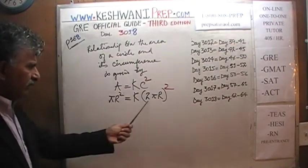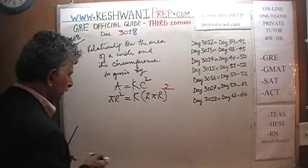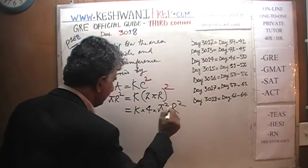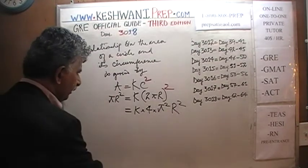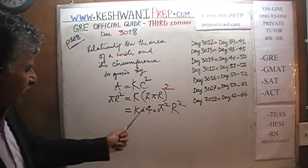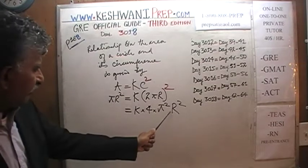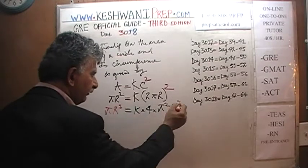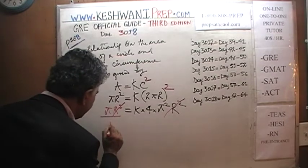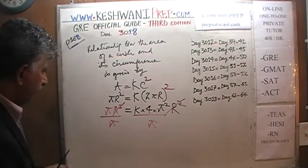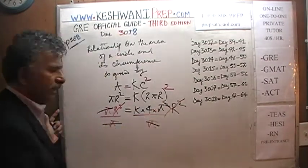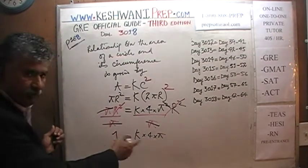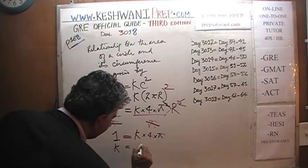We solve for k. Opening the parenthesis: k times 4 π squared r squared. Since the left side is π r squared, we divide both sides by r squared — r squared cancels. Then dividing both sides by π, the π on the left disappears, and 4π squared becomes 4π. So we have 1 = k times 4π, which gives k = 1 over 4π.